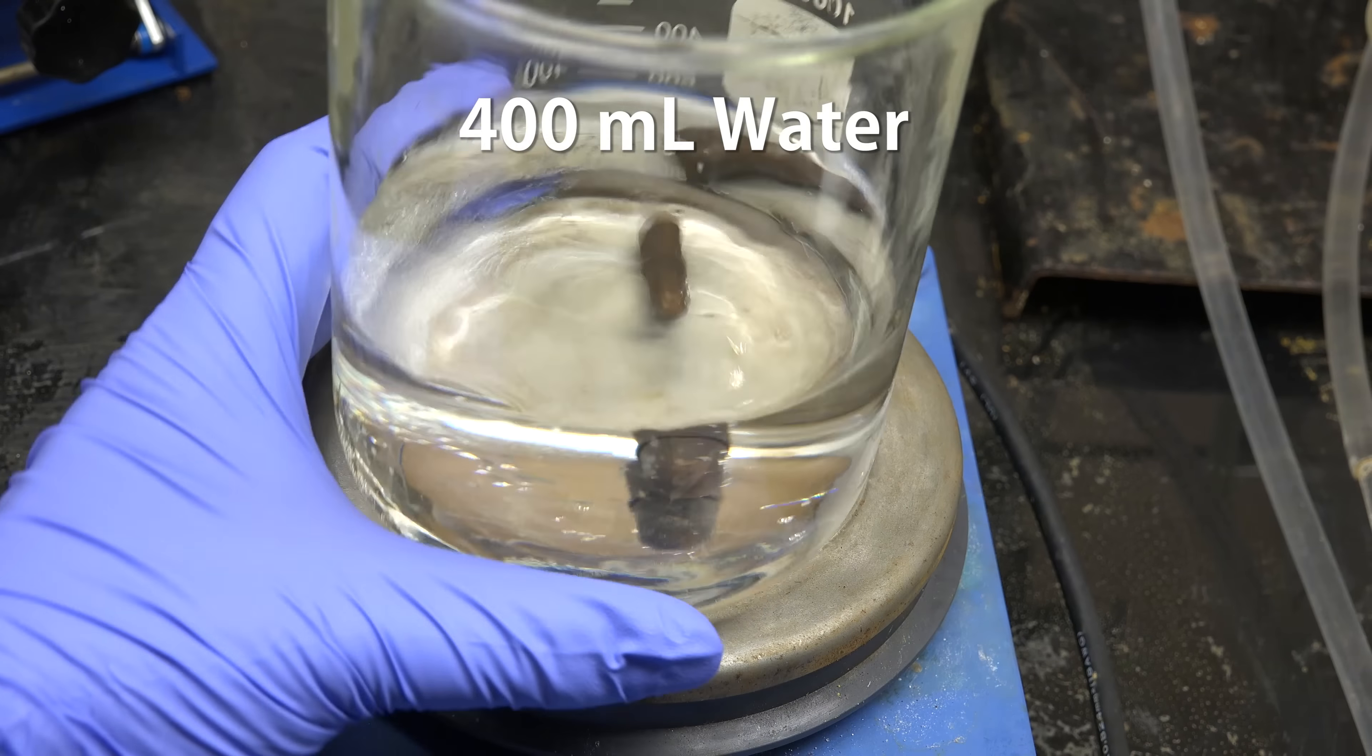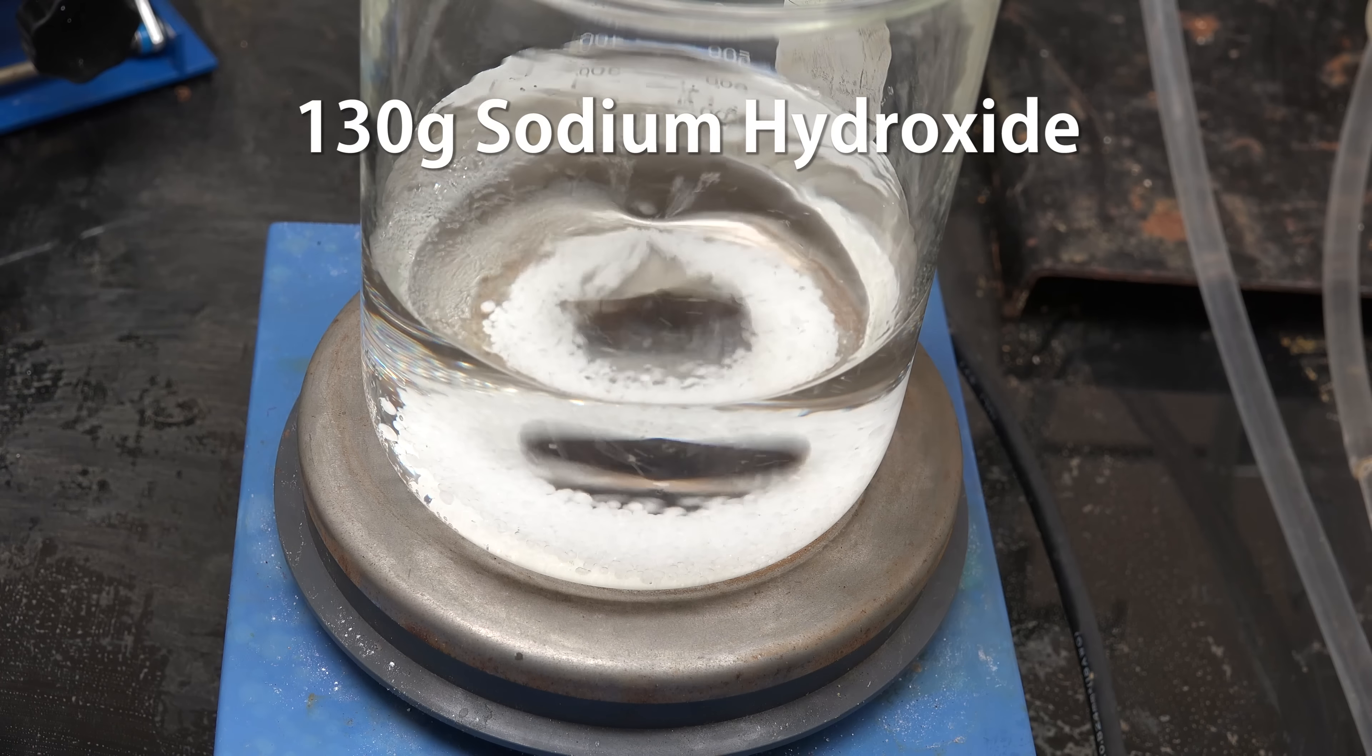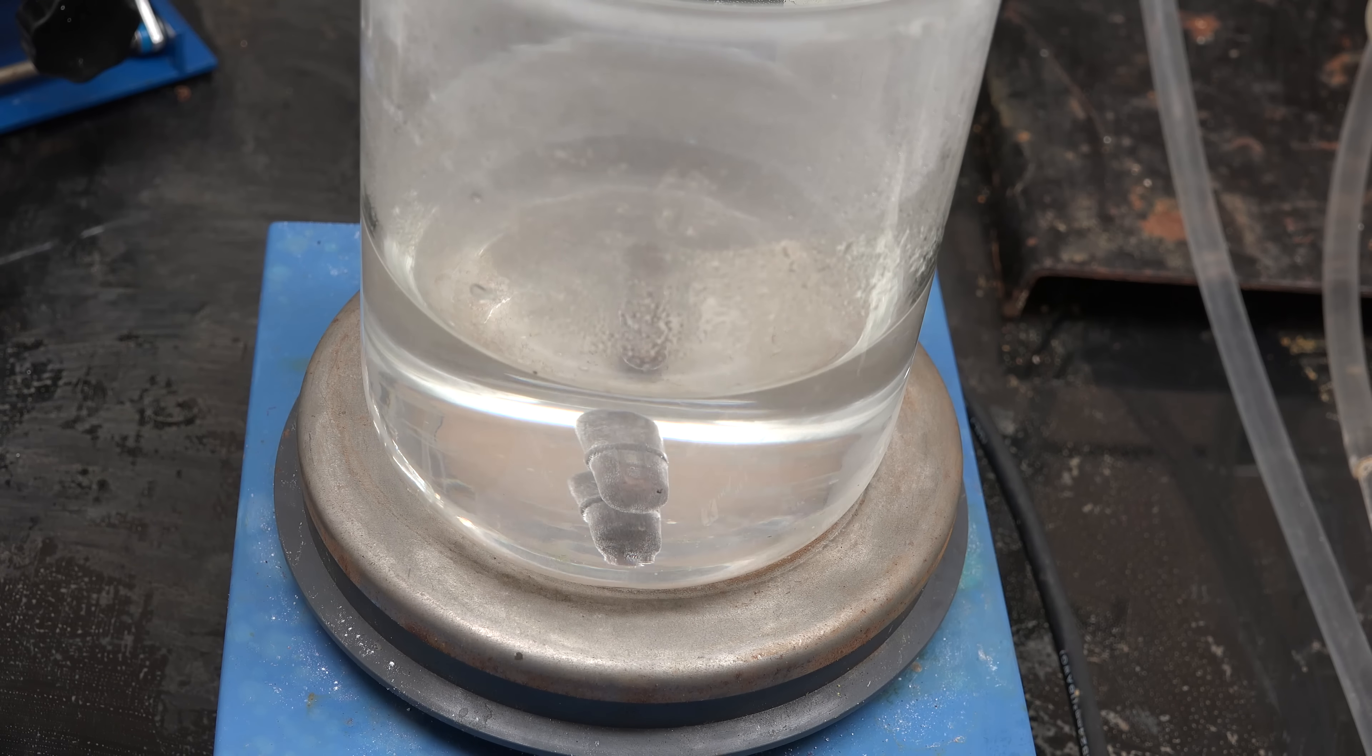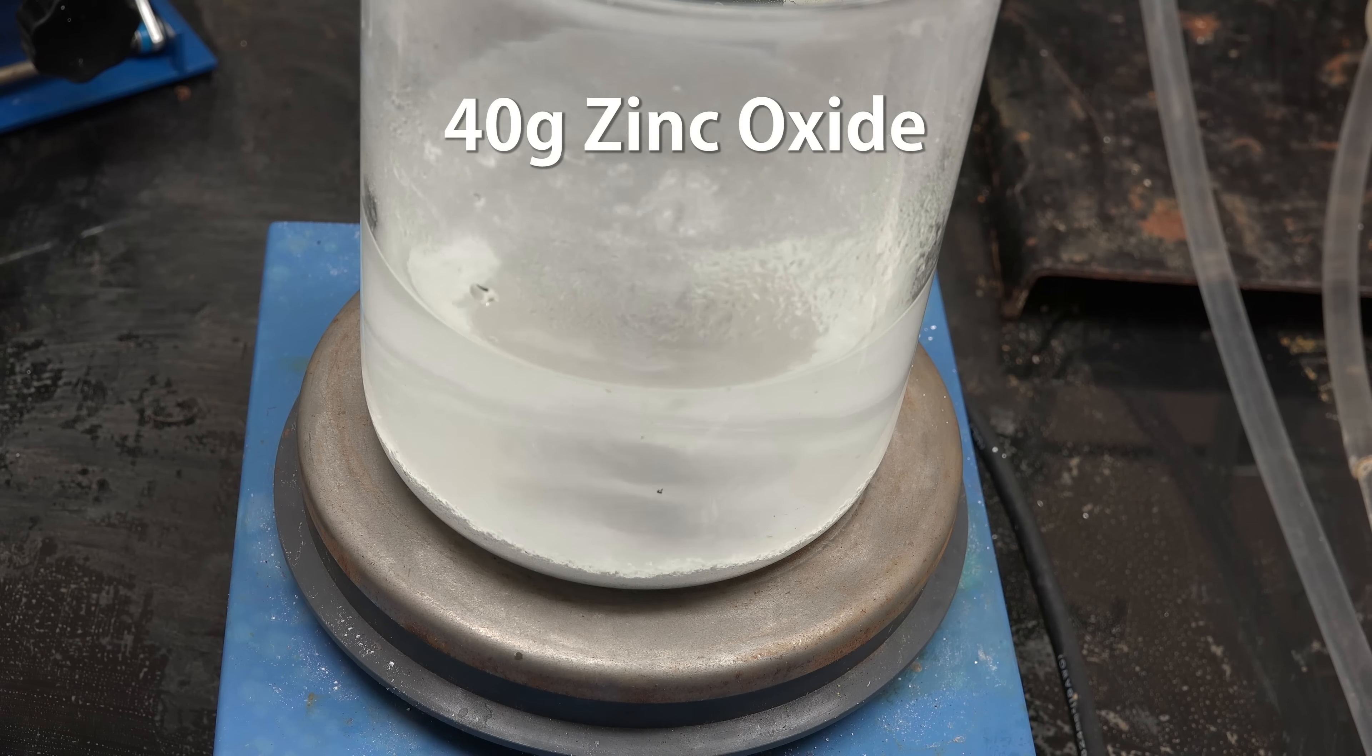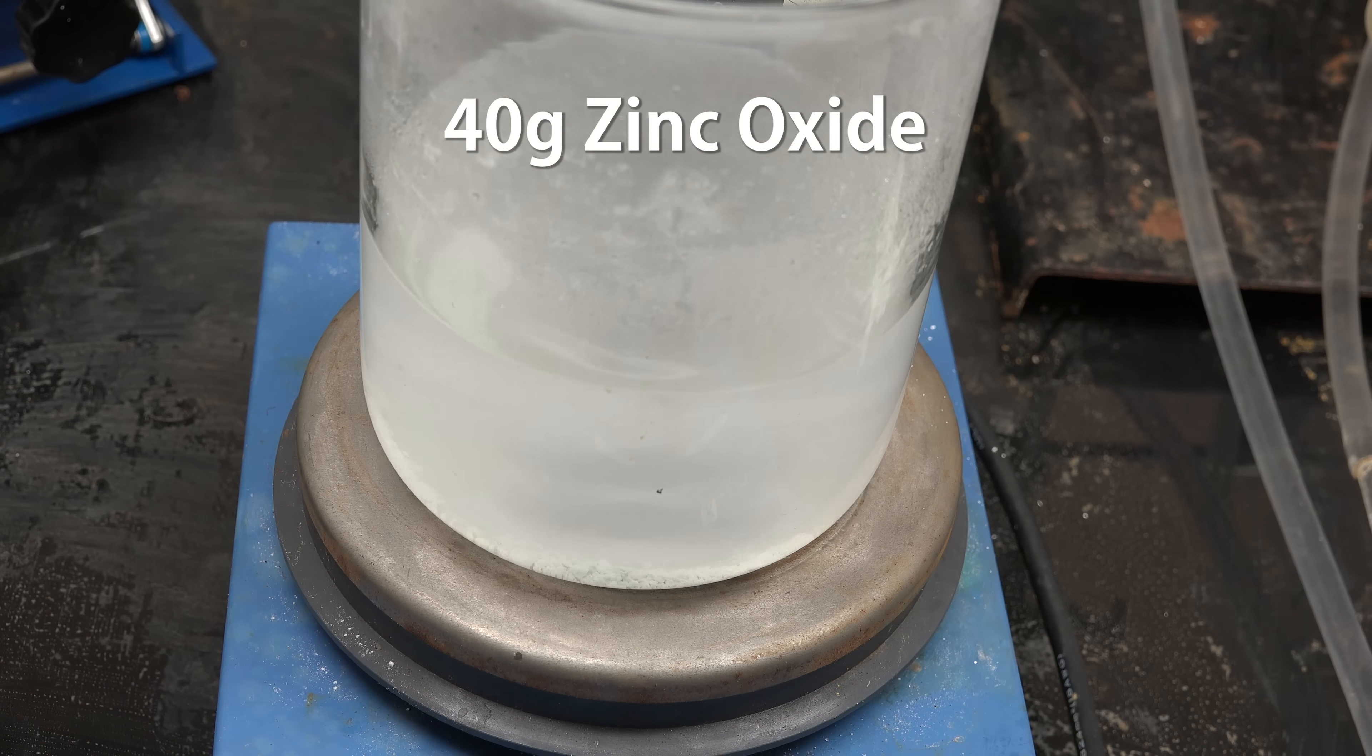Start with 400 mL of water and add to it 130 g of sodium hydroxide. Stir it until it dissolves. Now add zinc oxide until it stops dissolving. I add about 40 g in two 20 g portions.